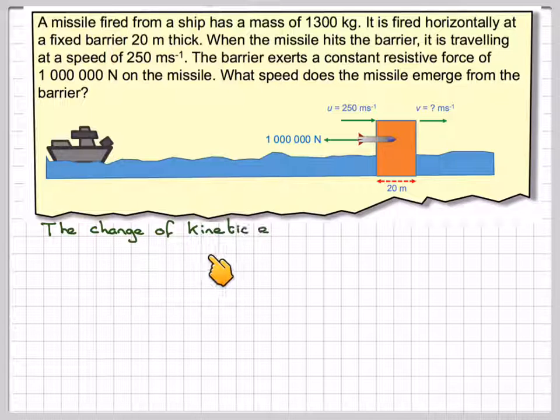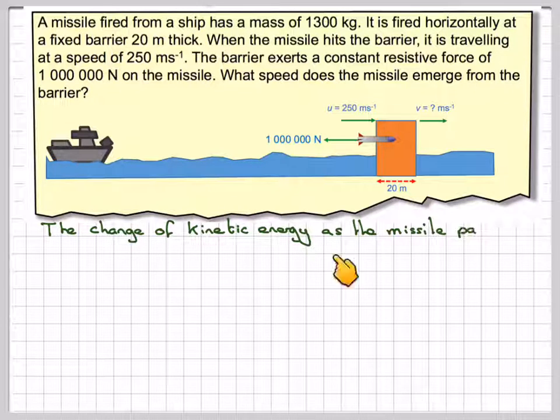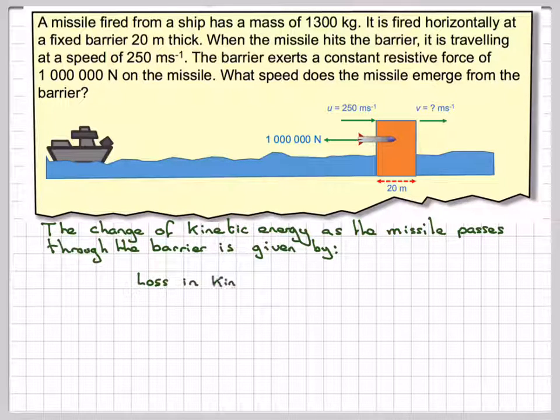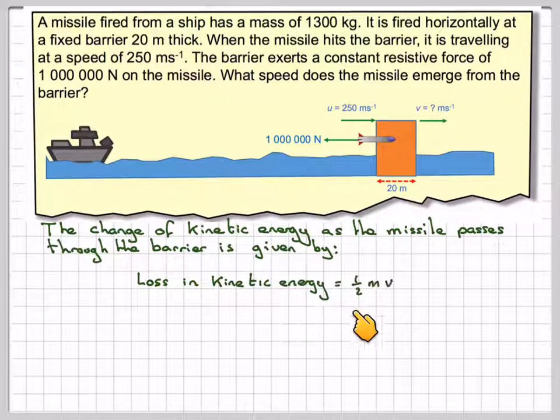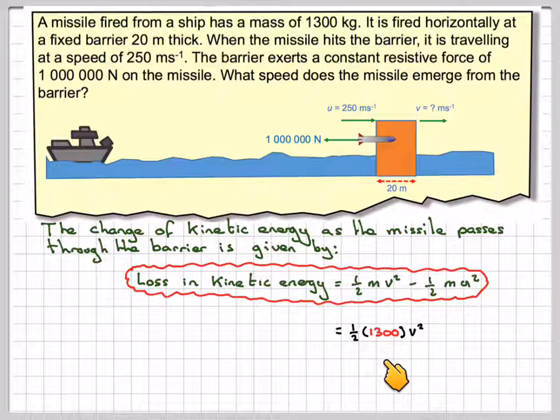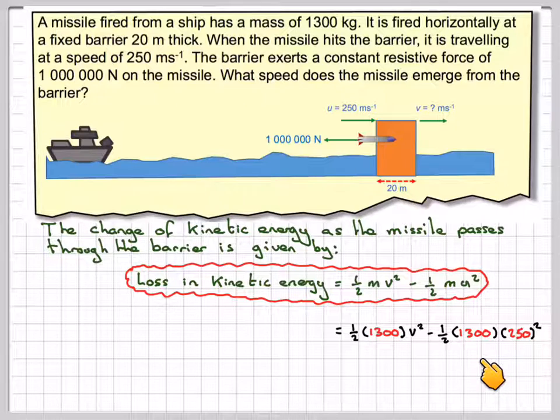The change in kinetic energy as the missile passes through the barrier is given by loss in KE, which is ½mv² minus ½mu². That's going to be ½ times 1,300 times v² minus ½ times 1,300 times 250².